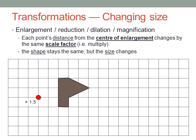And of course, the centre of enlargement doesn't have to be part of the shape, just like when we did rotation. But the process is exactly the same. Move each point one and a half times the distance it currently is from the centre of enlargement. And there's the image.